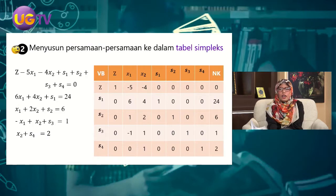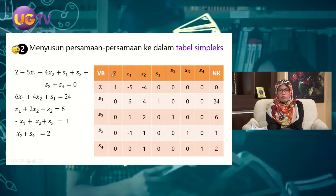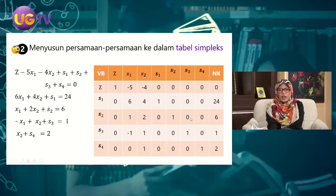Langkah kedua adalah menyusun persamaan yang sudah dalam bentuk baku ke dalam tabel simplex. Baris pertama memuat semua variabel: Z, X1, X2, S1, S2, S3, S4, dan nilai kanan. Pada kolom pertama kita gunakan Z dan slack variable karena slack variable adalah variabel basis.